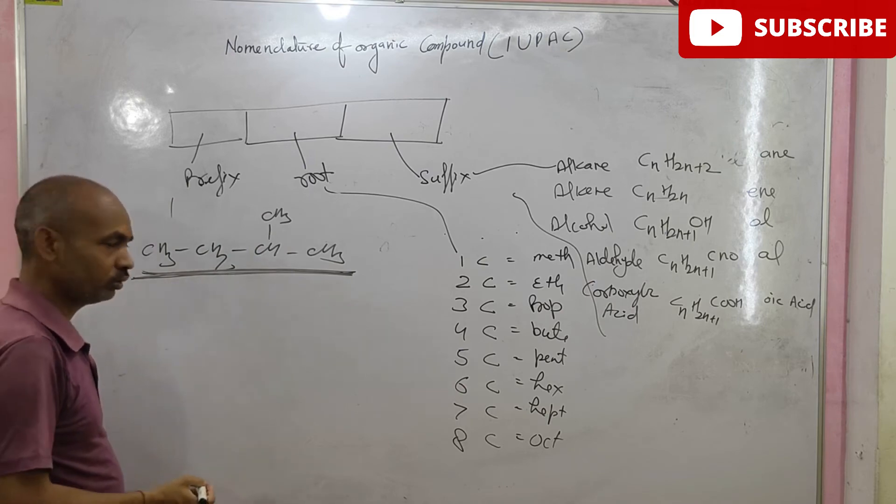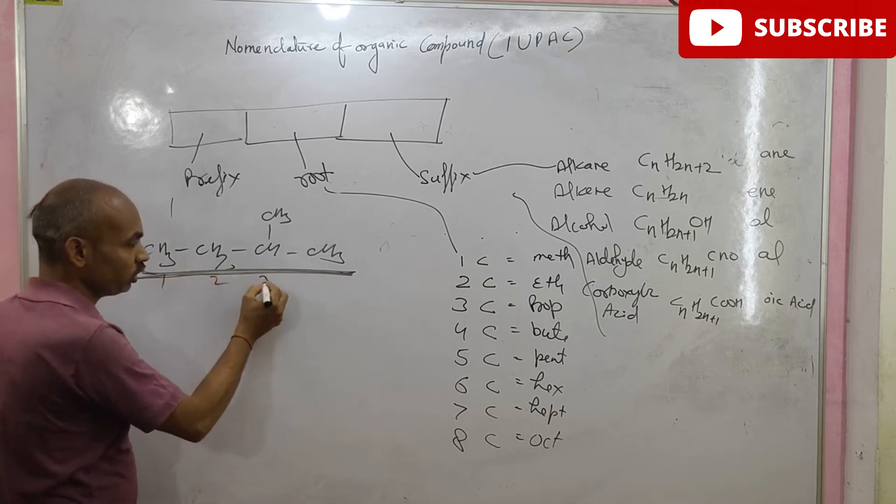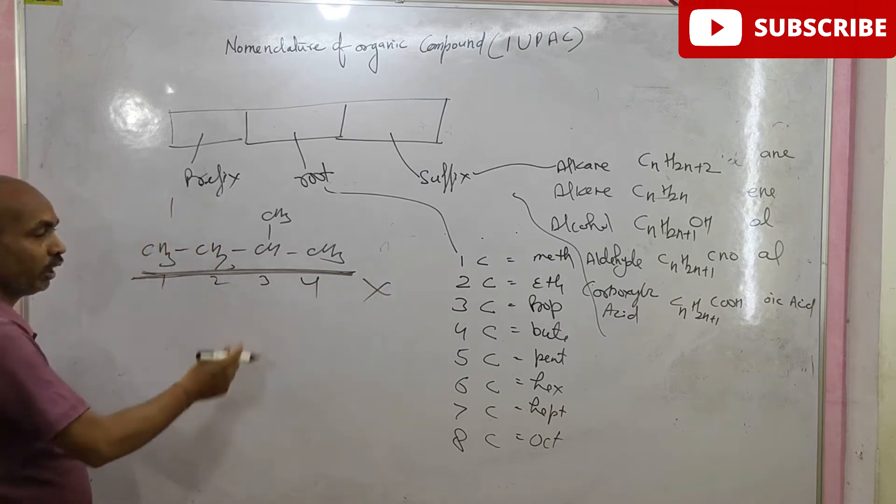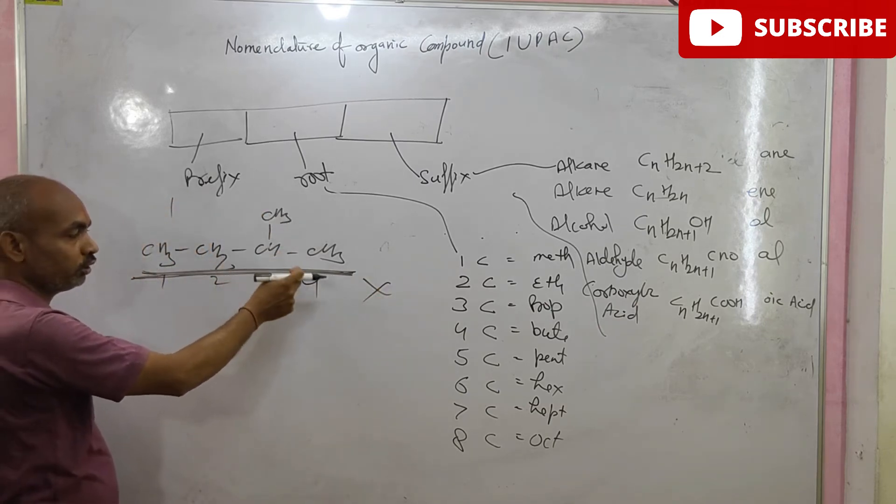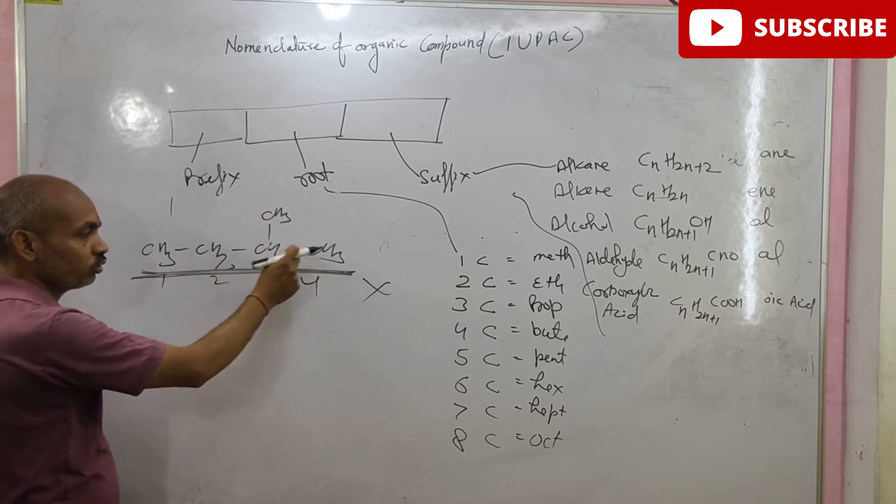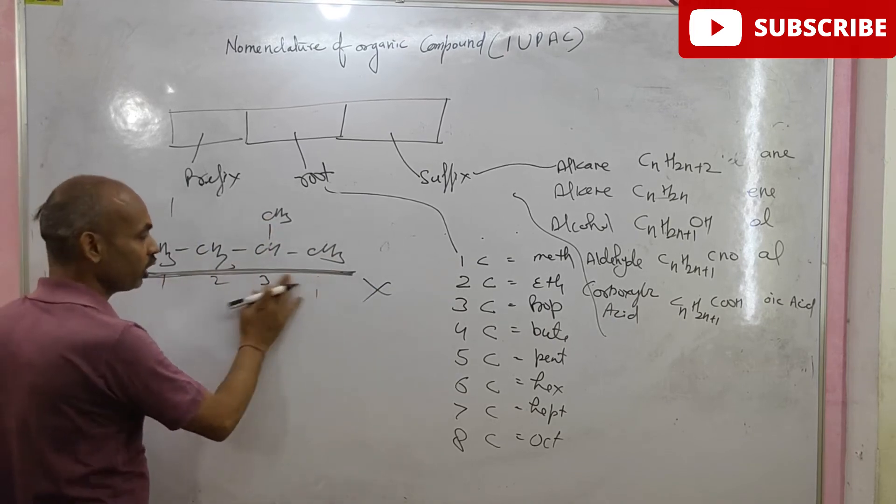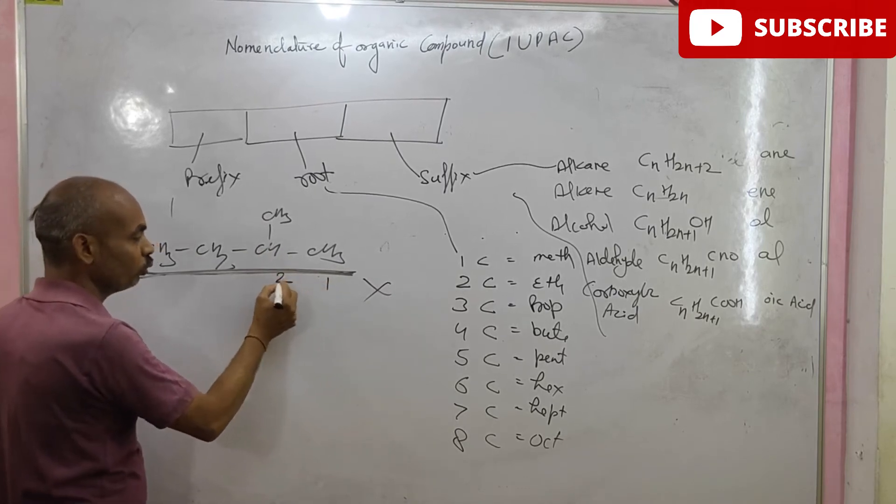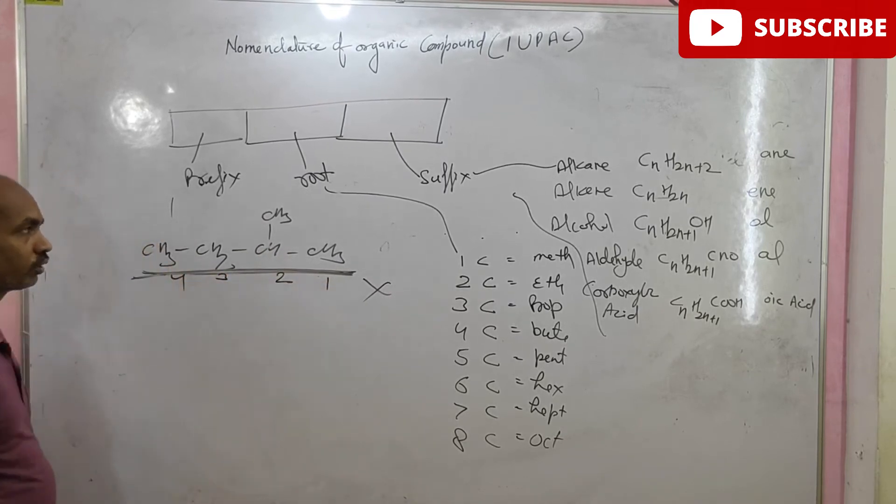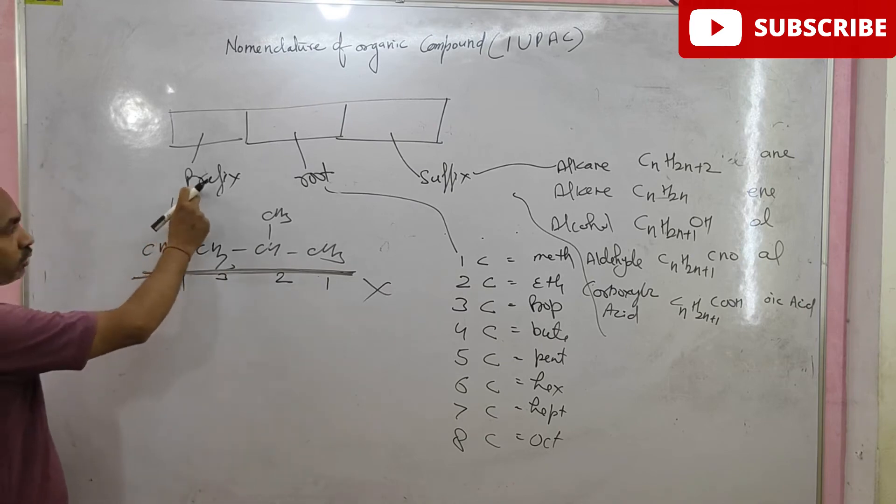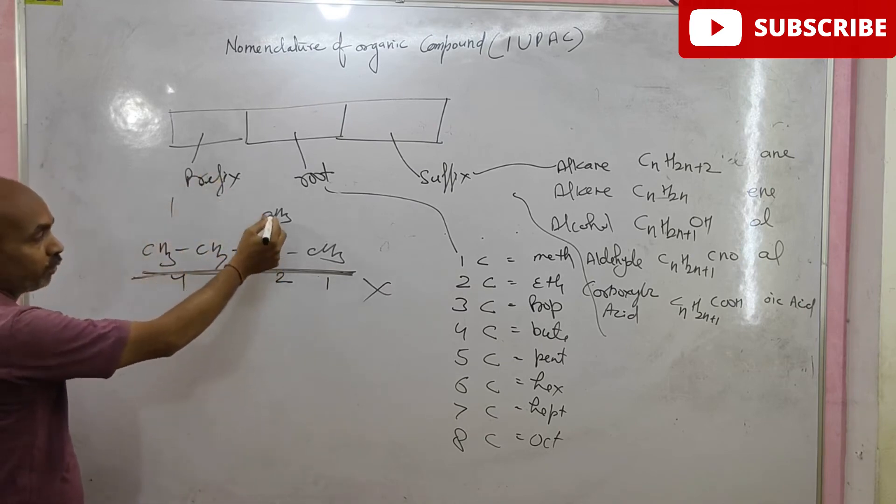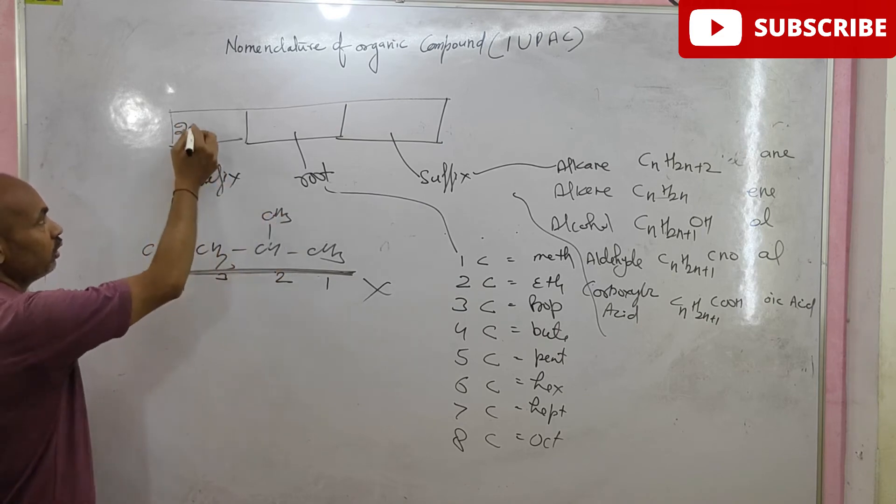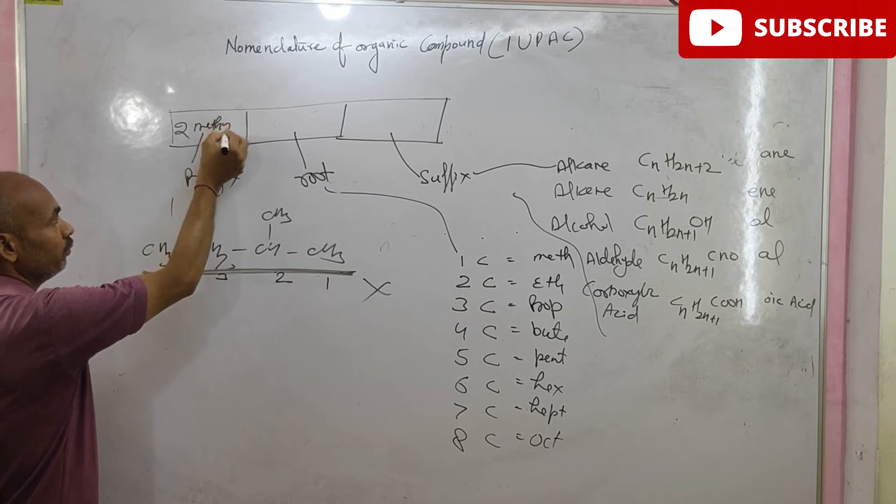There are two ways of numbering. 1, 2, 3, 4. But it is wrong way. Because the entry group is nearer to this point. So, we will start numbering by giving at minimum number. 1, 2, 3, 4. Now, prefix. Prefix is present as 2. 2. What is this? Methyl. Methyl.